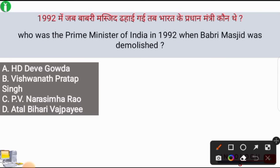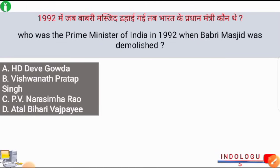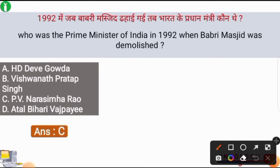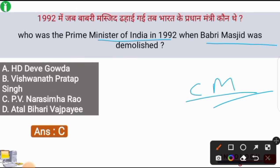Who was the Prime Minister of India in 1992 when Babri Masjid was demolished? The correct answer is option number C, i.e. PV Narsimha Rao. PV Narsimha Rao was the Prime Minister of India at the time when Babri Masjid was demolished.